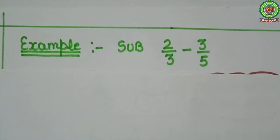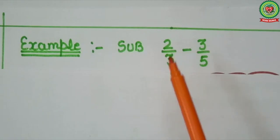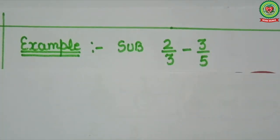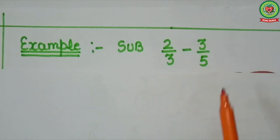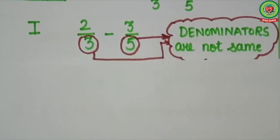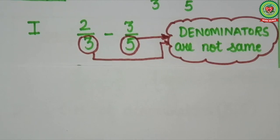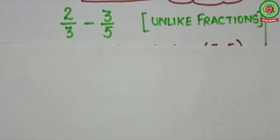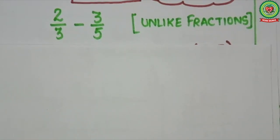Let's understand with examples. Here we have to subtract 2 upon 3 and 3 upon 5. Step 1: Check denominators. Here denominators are 3 and 5 which are not same. Therefore these fractions are unlike fractions.